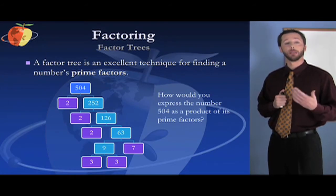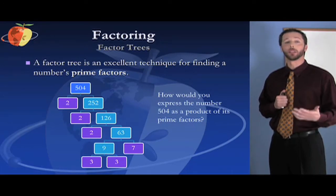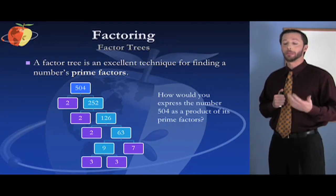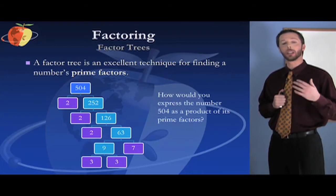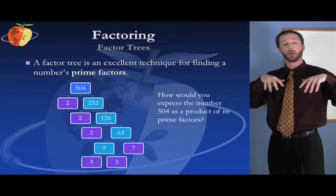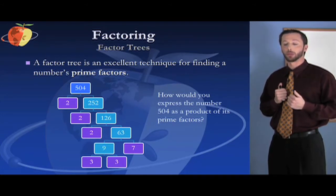7 can't be divided any further because it's prime, it can only be evenly divided by one and itself. Anything else is going to give you a decimal remainder. But 9 could be factored into 3 and 3. So when you get to the bottom of the tree, what's at the end of those branches are the prime factors. That's why we call it a factor tree.